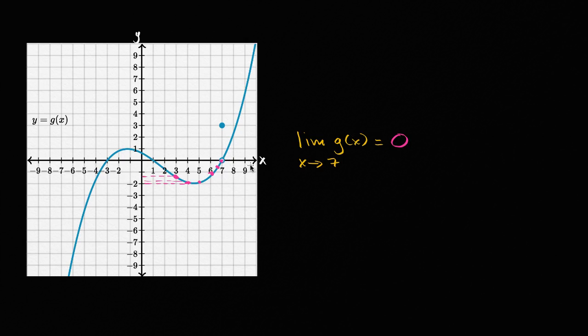Let's see if that's also true for x values greater than seven. So g of nine is up here, looks like it's around six. g of eight looks like it's a little bit more than two. g of 7.5 looks like it's a little bit more than one. g of 7.1 looks like it's a little bit more than zero.